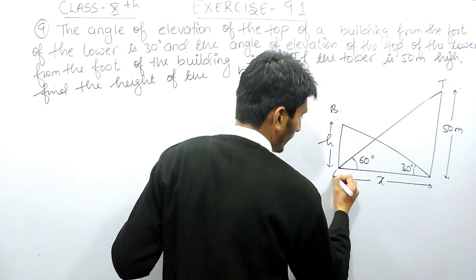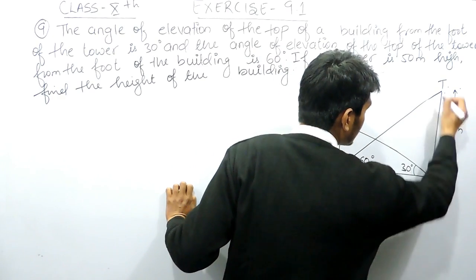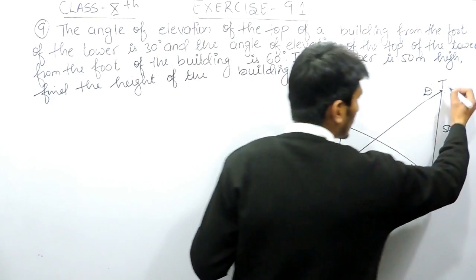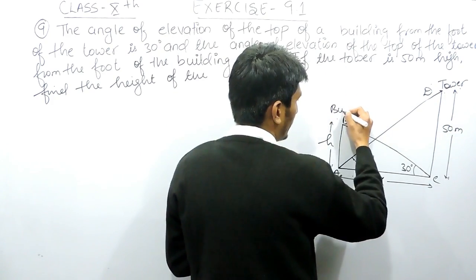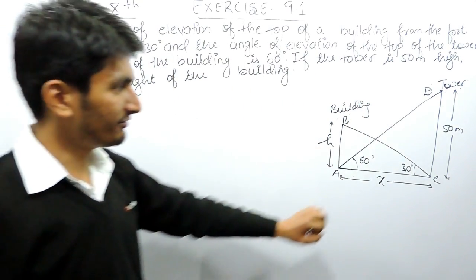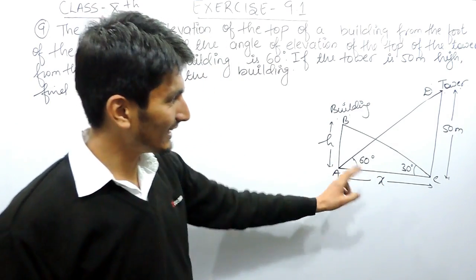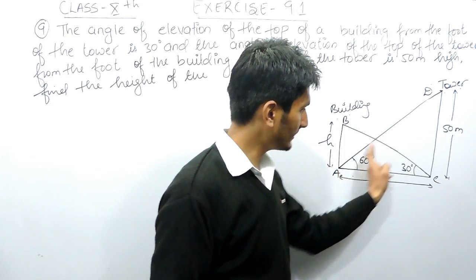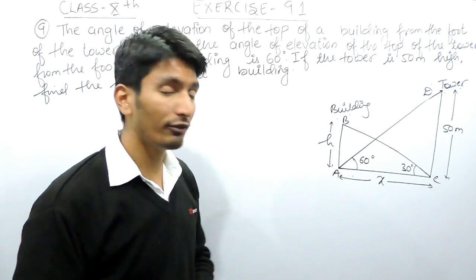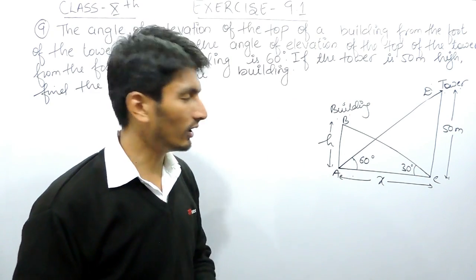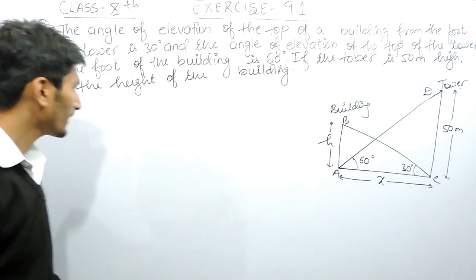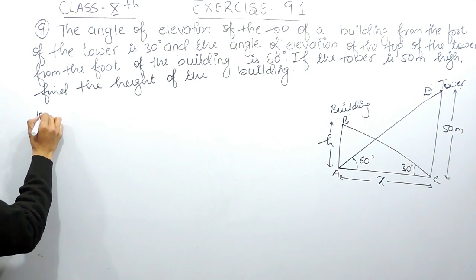Now if I name these triangles: this is triangle ABC and this point can be considered as D. This is the tower and this is the building. This figure is important. We can see that there are two triangles — the first is the smaller one and the second is the bigger one. In both triangles, you have to use the ratio for tan(θ), and substitute the value from one equation into the second equation to get the answer.